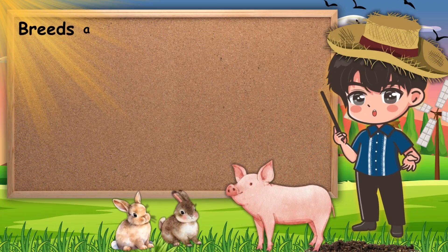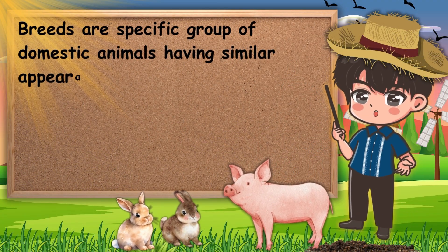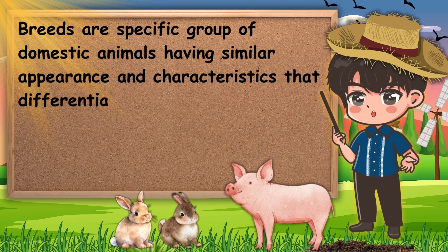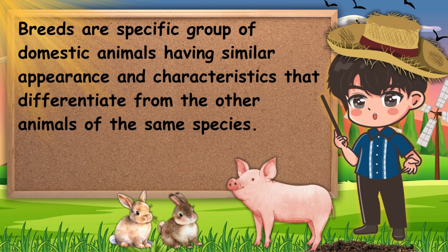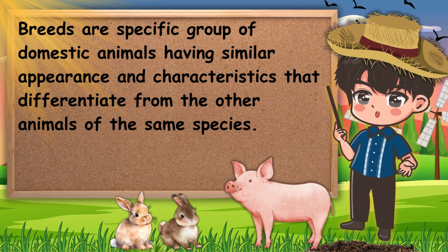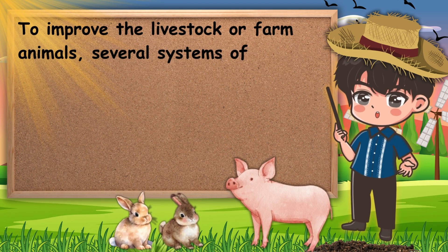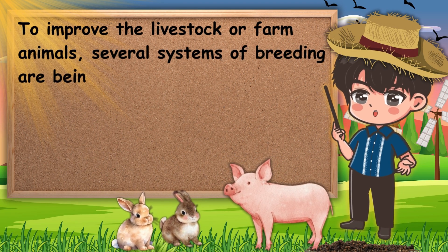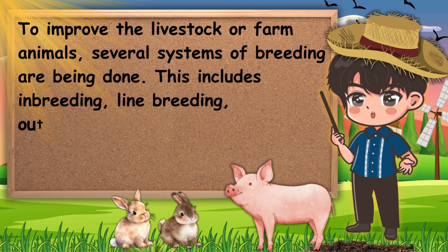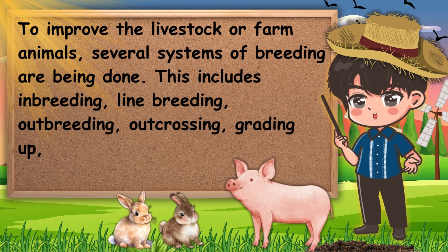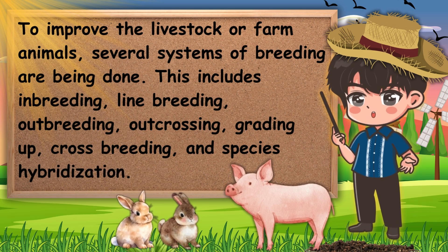Now let's talk about breeds. Breeds are a specific group of domestic animals having similar appearance and characteristics that differentiate them from other animals of the same species. To improve livestock or farm animals, several systems of breeding are being done. This includes inbreeding, line breeding, outbreeding, outcrossing, grading up, crossbreeding, and species hybridization.